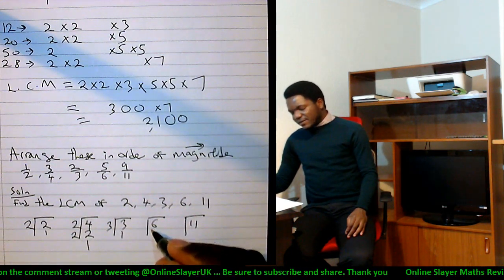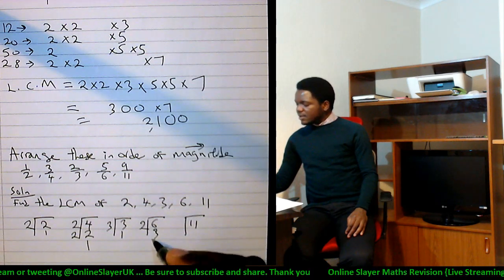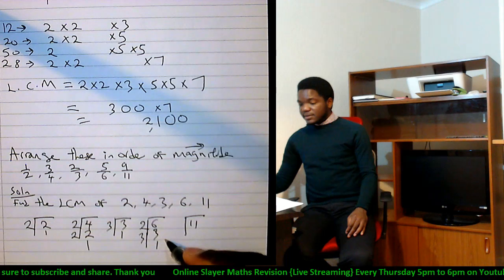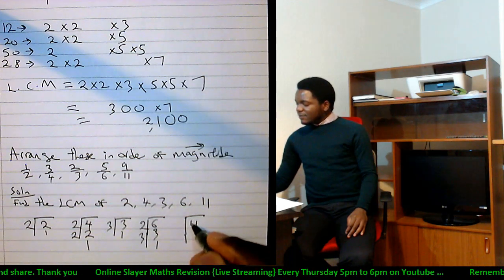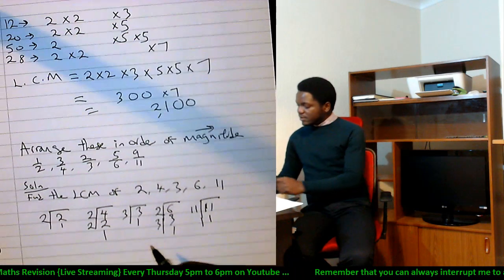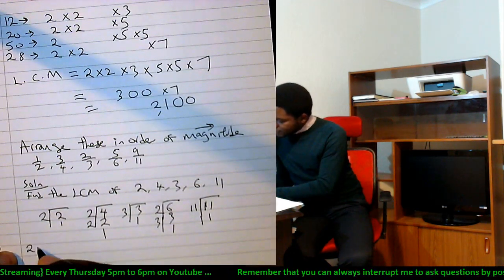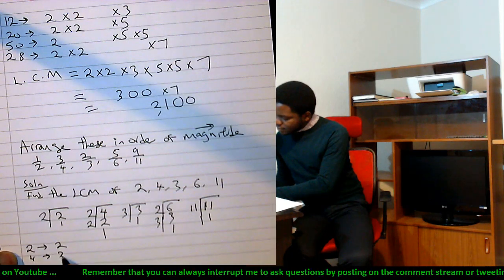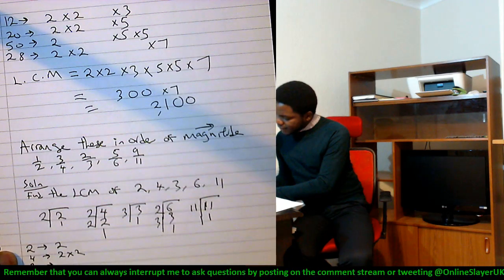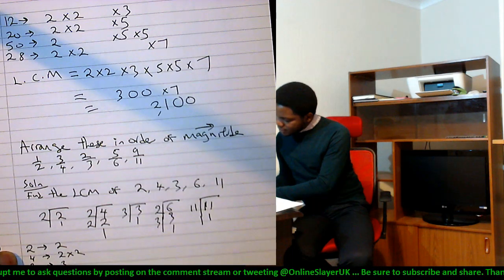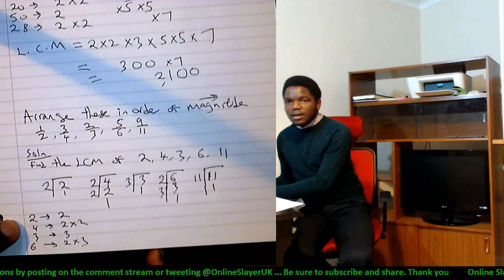So it just goes two is divisible by two. Six is divisible by two, gives you a three, and a three goes in that to give you a one. Six is two times three. Eleven is a prime number anyway.